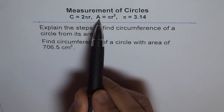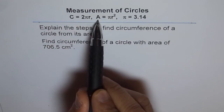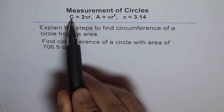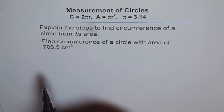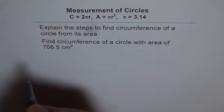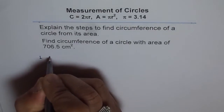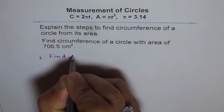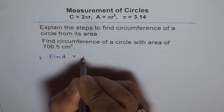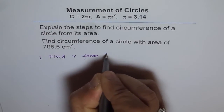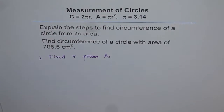So if we are given the area, we can find the radius. Once we find the radius, we can find the circumference. So step number 1 is to find the radius — we have to find r from the given area. That is the first step.